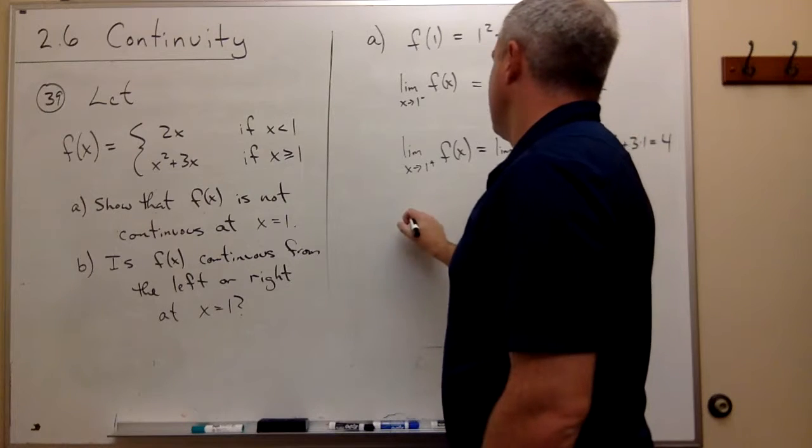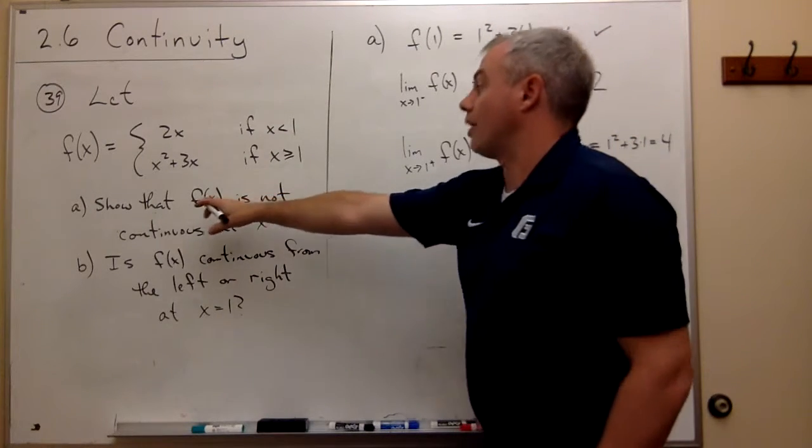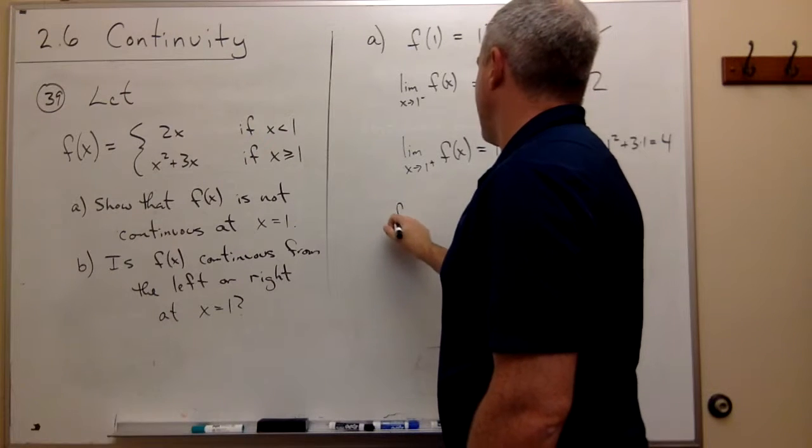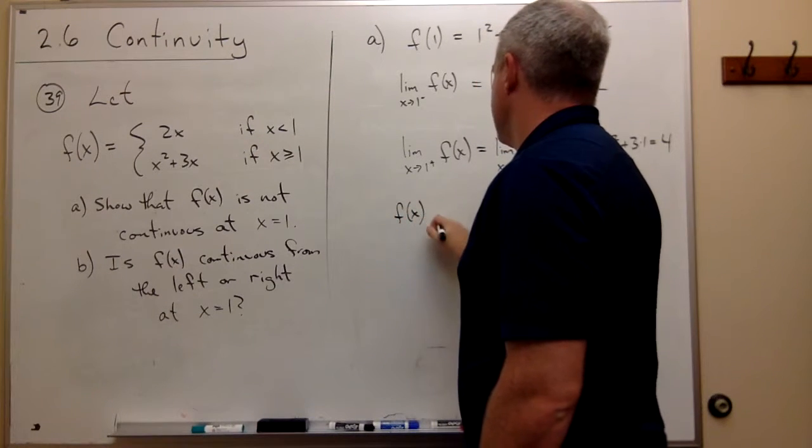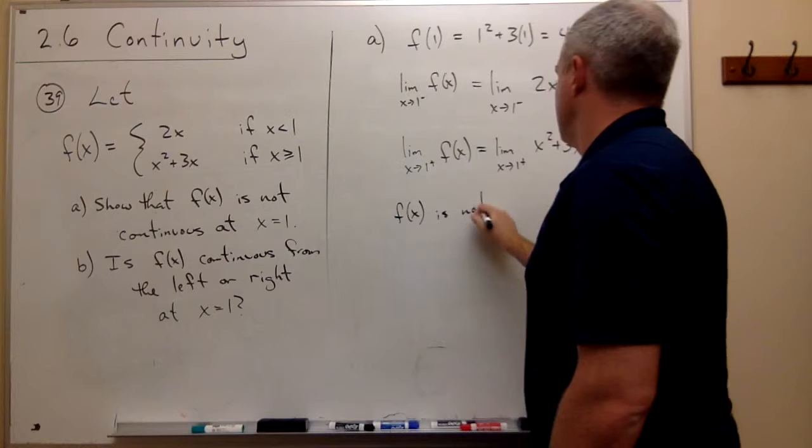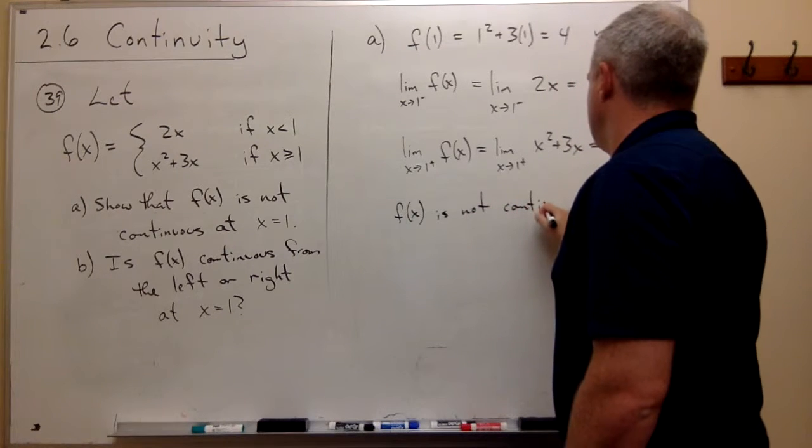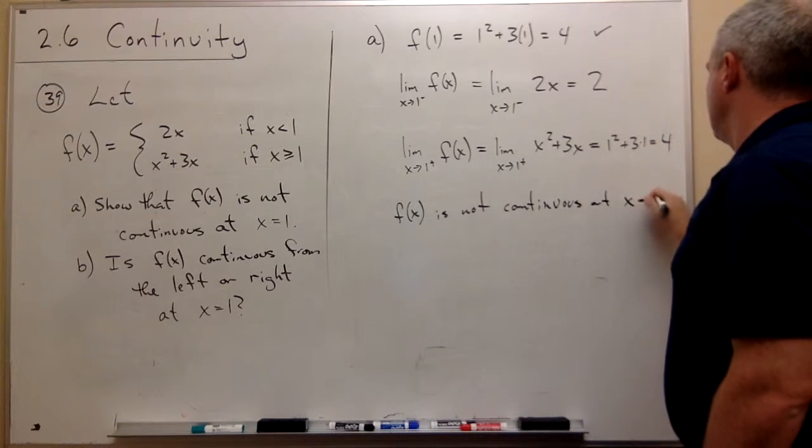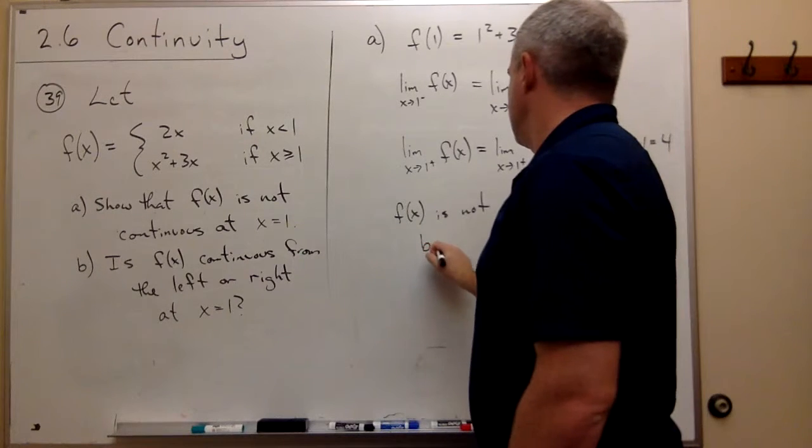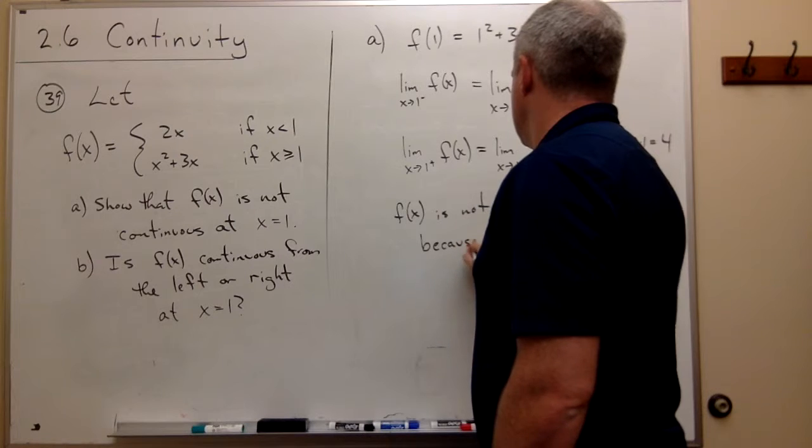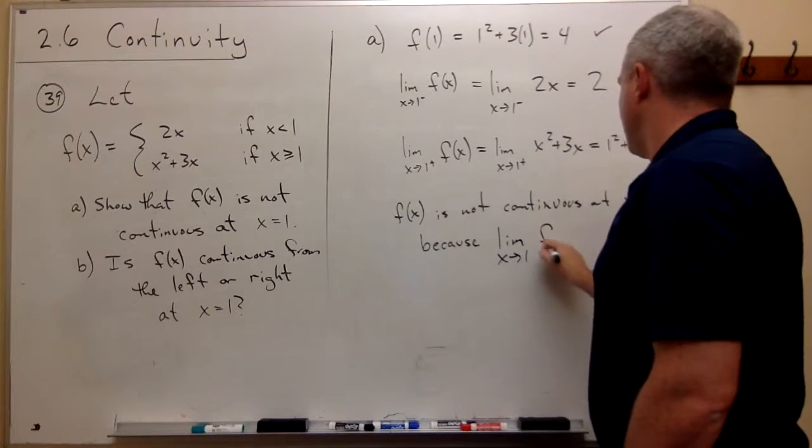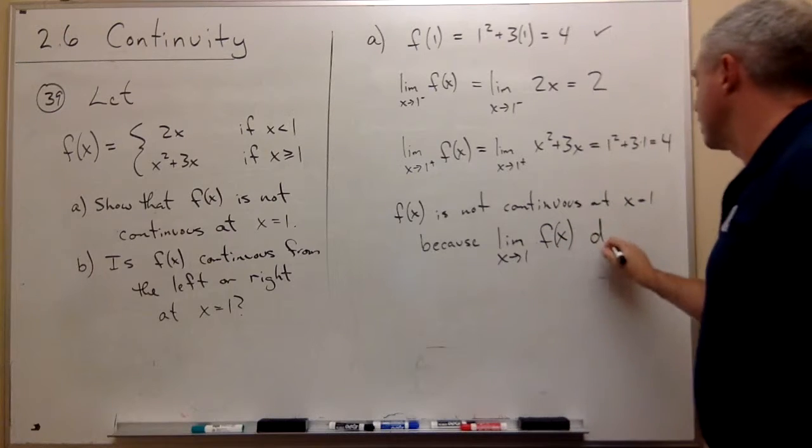In other words, I could say I want to show that f(x) is not continuous at 1. F(x) is not continuous at 1 because the limit as x goes to 1 of the function does not exist.